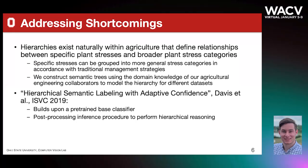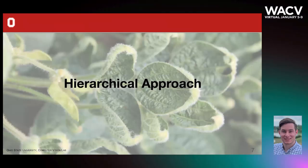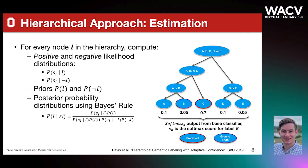One such approach that naturally fits our requirements is that of hierarchical semantic labeling with adaptive confidence. Thus, we explore this approach. I will briefly provide an example for how this approach works, and more details can be found in the paper. The approach begins with an estimation phase: using a pre-trained base classifier, we first build positive and negative likelihood distributions for all of the nodes in the hierarchy.